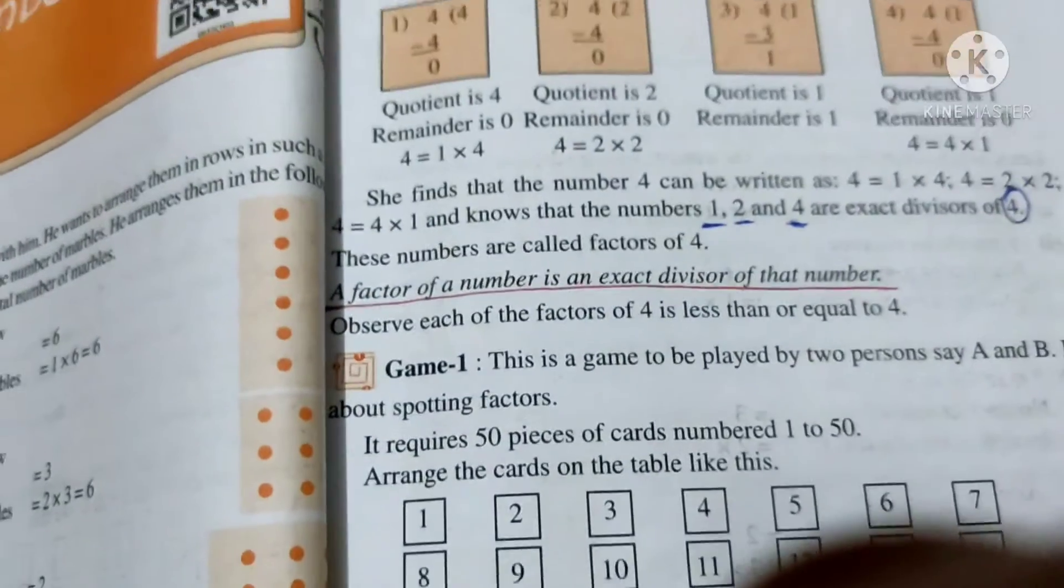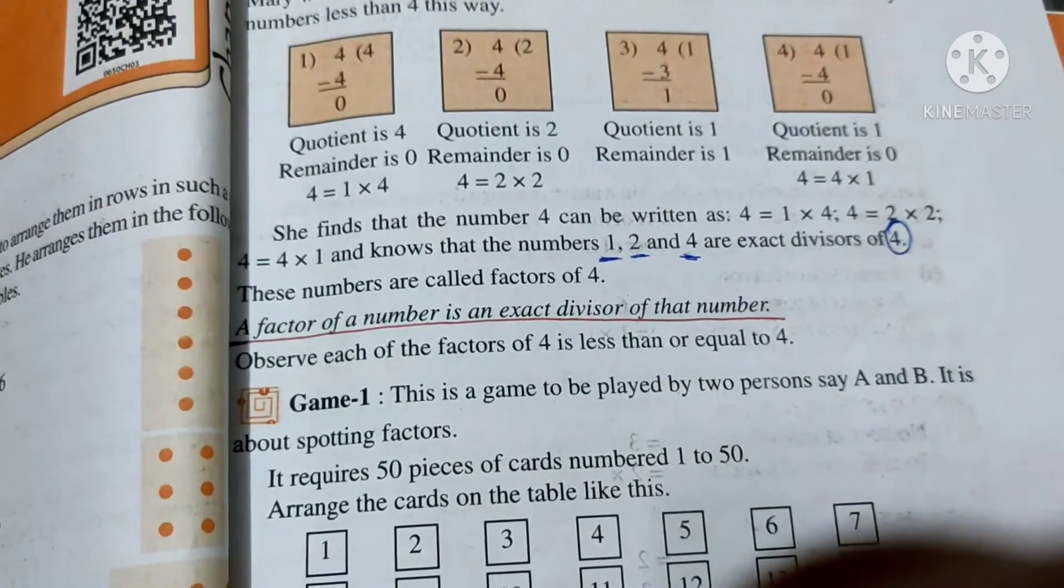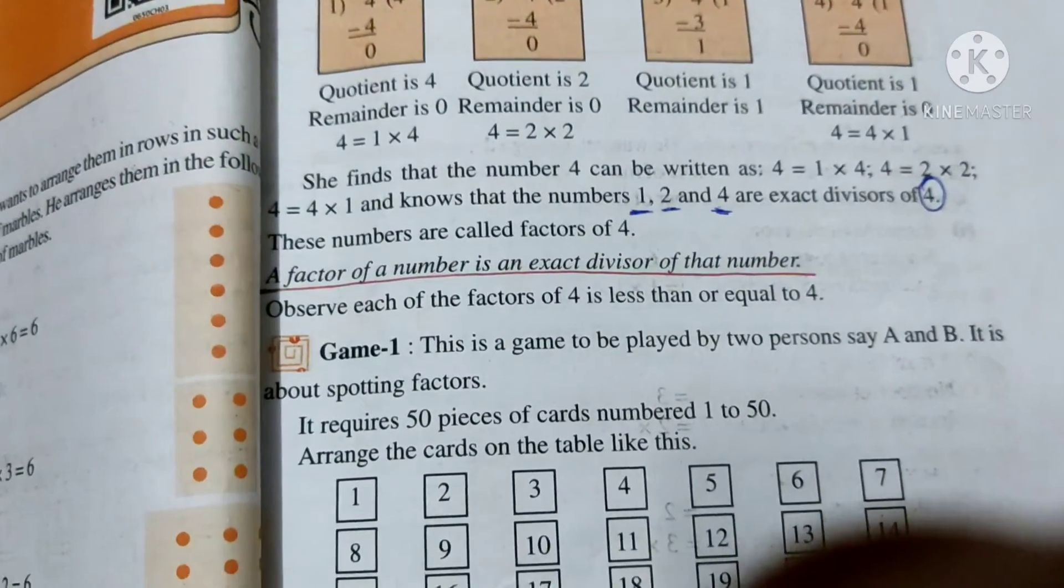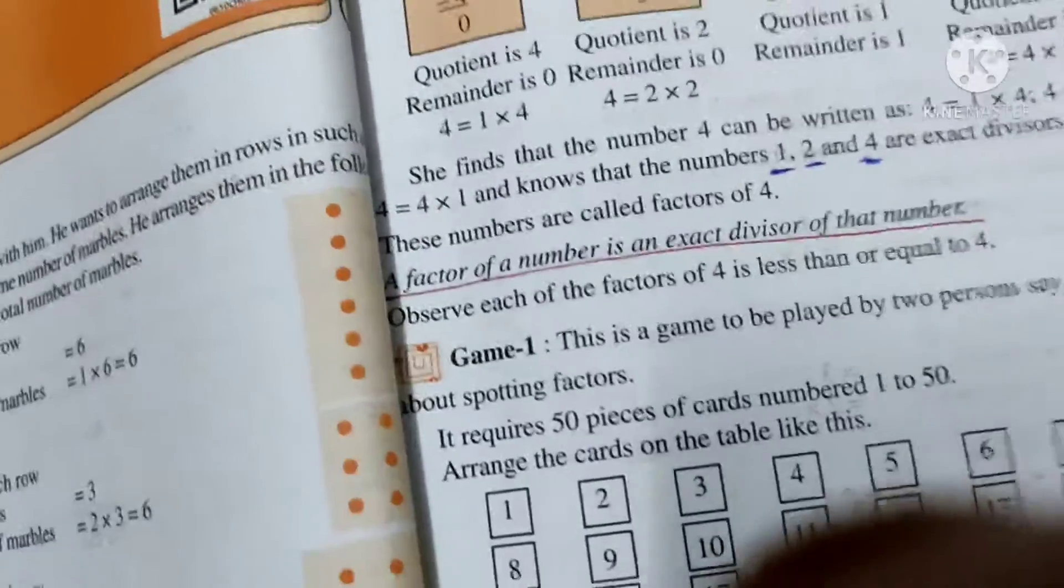Also, factors are finite in number. They are always finite in number. That means we can count them. They are countable. Let's move further. Let's know more about factors.